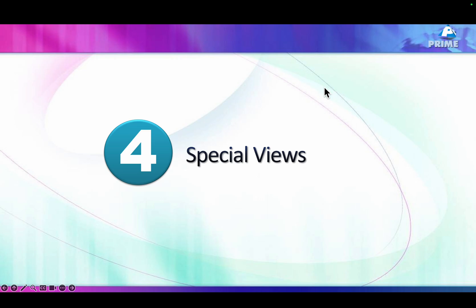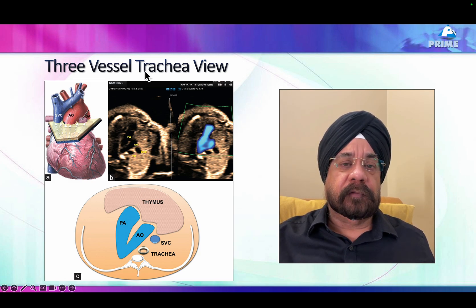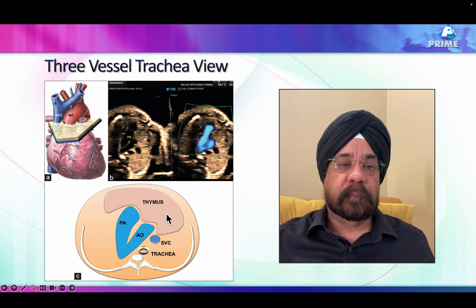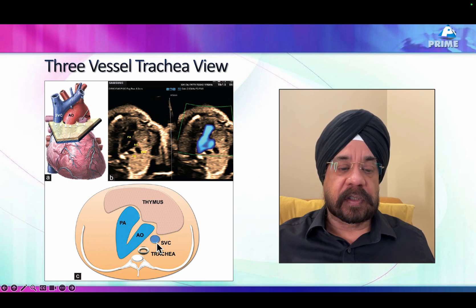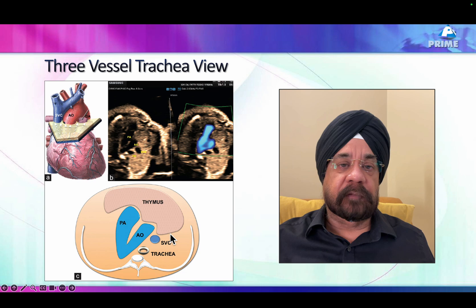We use a couple of special views in fetal echo. One is the three-vessel view — a wonderful view described by Yu et al. In this view, we cut the aorta and see the SVC, the aorta, and the pulmonary artery in a single plane, along with the trachea and superior vena cava. This is a very useful plane: we can see thymus hypoplasia (present in certain congenital disorders), size of pulmonary arteries, size of aorta, size of SVC, and their relation to the trachea.